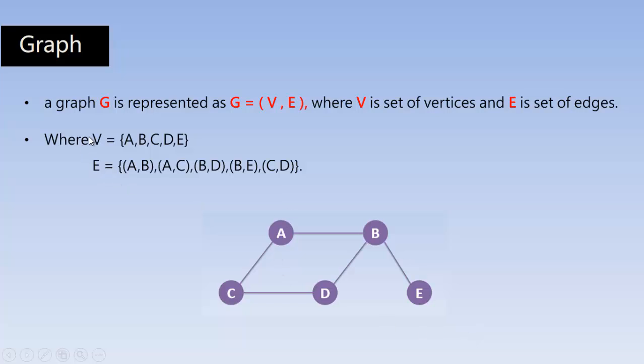The set of vertices is represented with the character V, and E is the set of edges. The edge (A,B) connects A and B, the edge (A,C) connects A and C, edge (B,D) connects B and D, and edge (C,D) connects C and D. So these are the edges. There are five edges and five vertices in this graph.